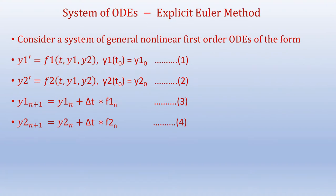Consider a system of general nonlinear first-order ODEs of the form: y1' = f1(t, y1, y2), with initial condition y1(t0) = y1_0, and y2' = f2(t, y1, y2), with y2(t0) = y2_0. This is a system of two first-order ODEs.